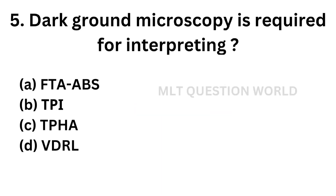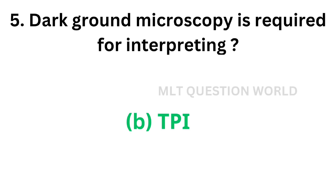Question number 5. Dark ground microscopy is required for interpreting: Option A, fluorescent treponemal antibody absorption test; Option B, Treponema pallidum immobilization test; Option C, Treponema pallidum hemagglutination test; Option D, VDRL. The correct answer is Option B, TPI or Treponema pallidum immobilization test.